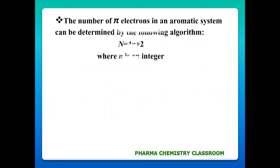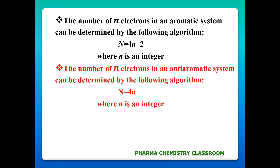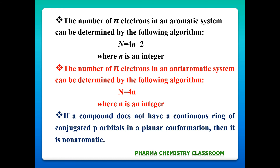Hückel's rule is a set of algorithms that combines the number of pi electrons (capital N) and the physical structure of the ring system to determine whether a molecule is aromatic, anti-aromatic, or non-aromatic. The equation is N = 4n+2, where capital N is the number of pi electrons and small n is a non-negative integer. If a compound does not have a continuous ring of conjugated p orbitals in planar conformation, it is non-aromatic.